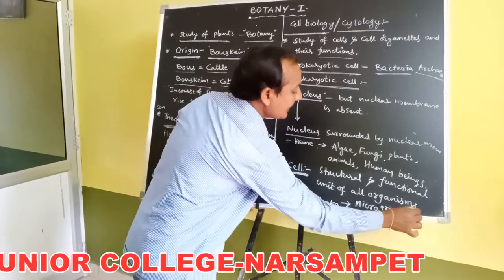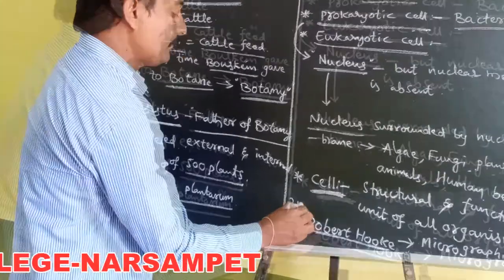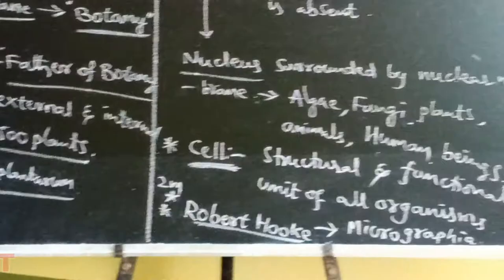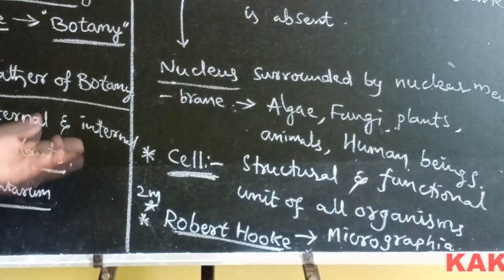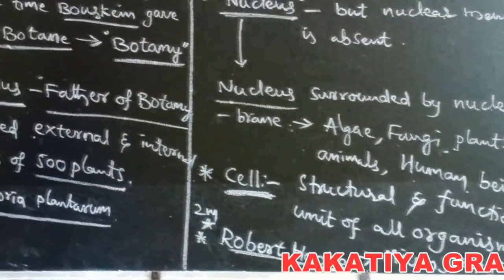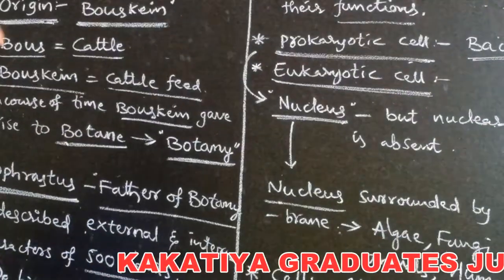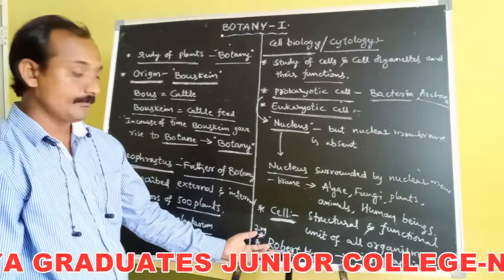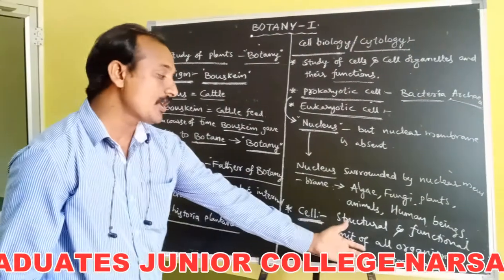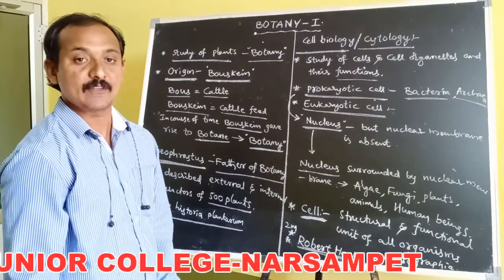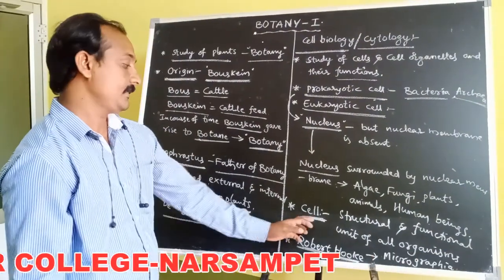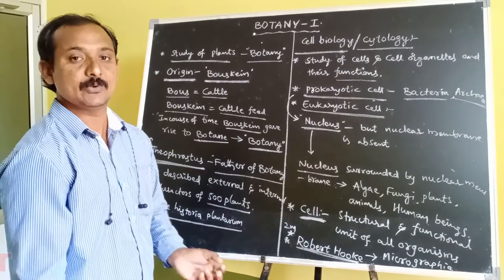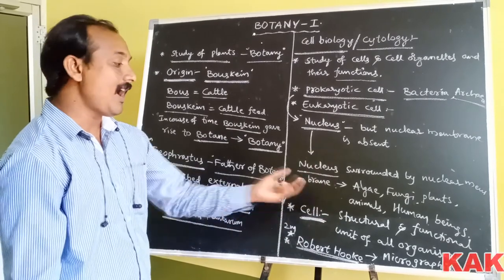This is a two-mark question: who discovered the cell and which book was written by him? Robert Hooke discovered the cell, and the book is called Micrographia. The cell is the structural and functional unit of all organisms.